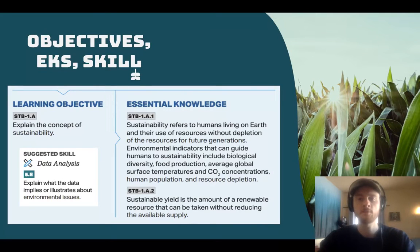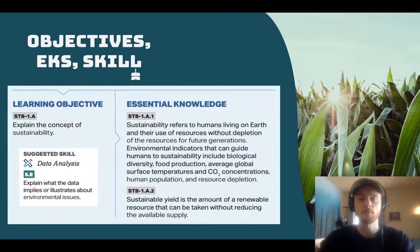Our objective today is to be able to explain the concept of sustainability — sustainability is more or less humans living on Earth in a way that doesn't deplete resources for future generations. We'll look at five different environmental indicators which can help us understand if we are or are not living sustainably. Then finally, we'll look at a concept called maximum sustainable yield, and our suggested science skill for the day is to explain what data illustrate about an environmental issue.